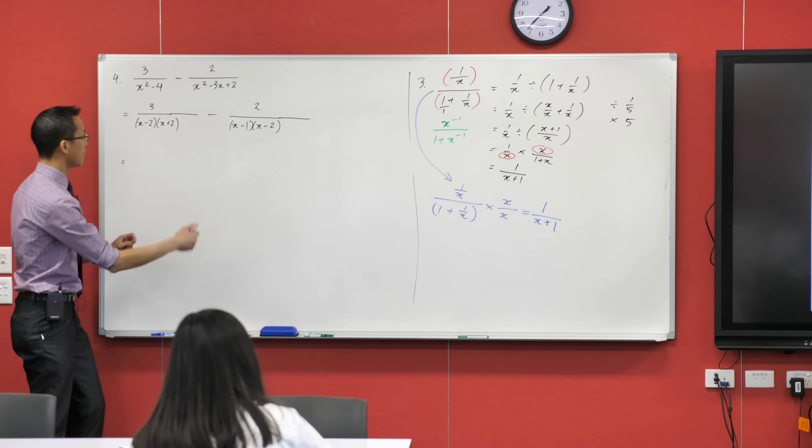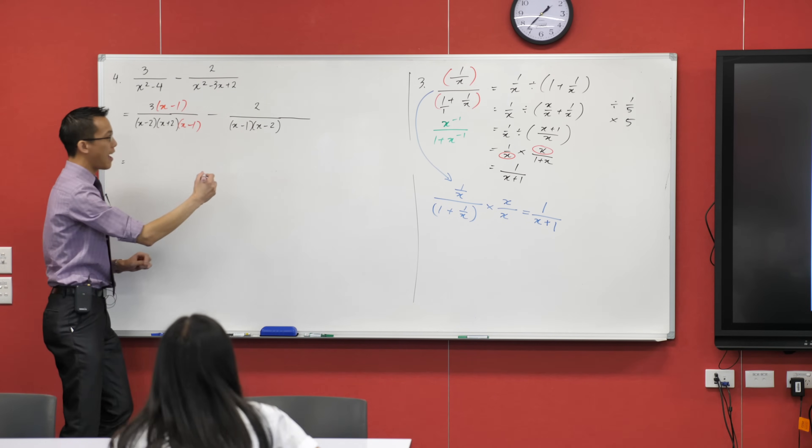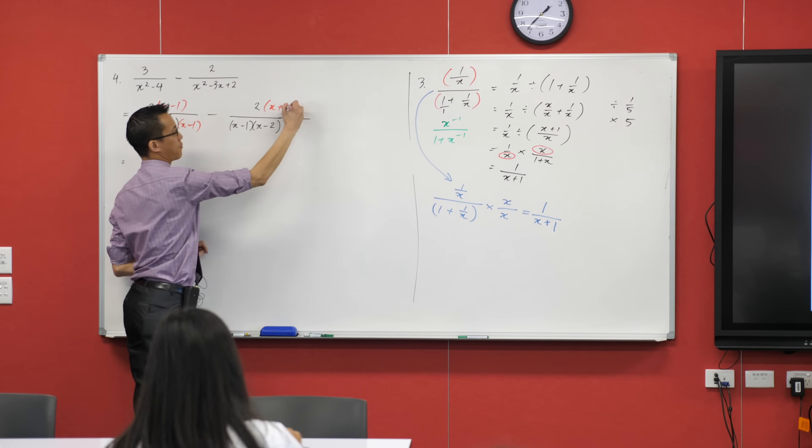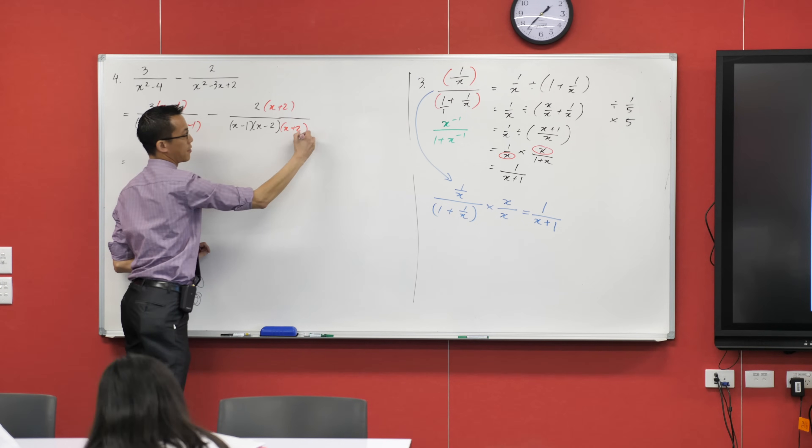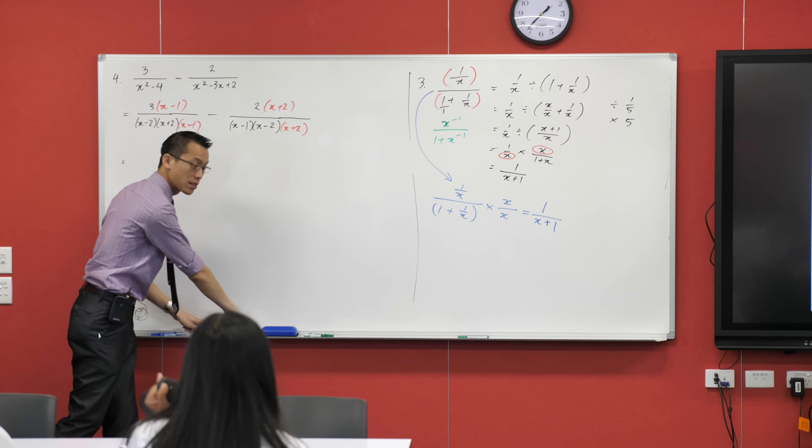Yeah? X minus 1 over here. X minus 1 over here. X plus 2 over here. And x plus 2 over here. Okay? I hope this looks clear to you and the extra color just highlights what's going on.